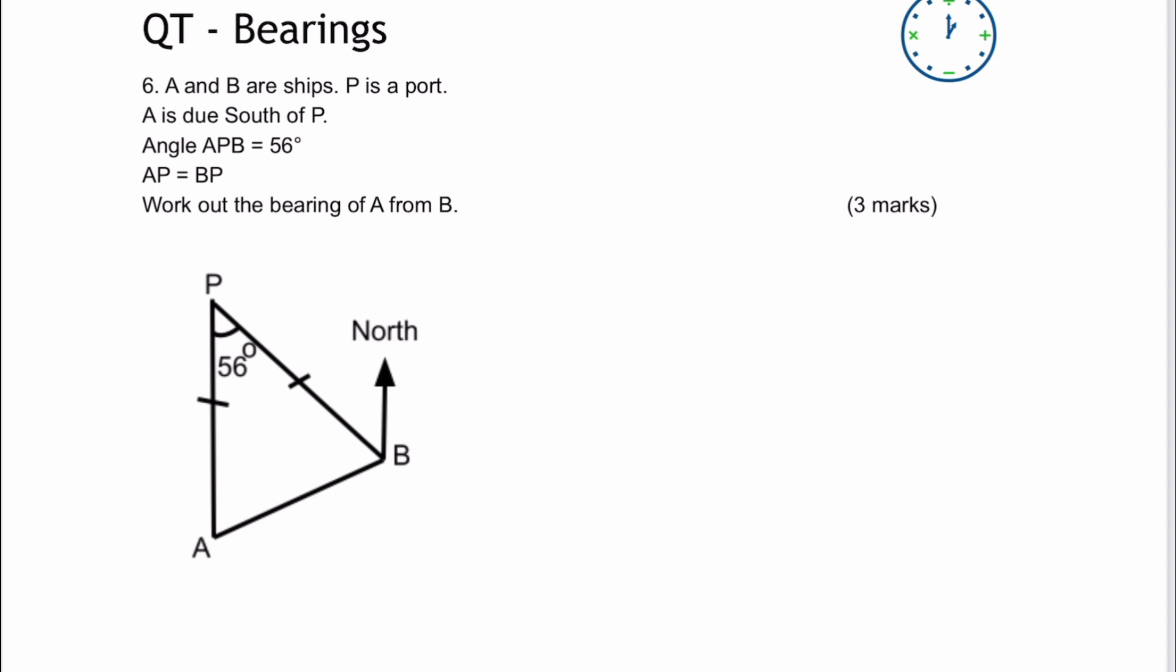So basically what we've got is an isosceles triangle, because we're told that AP equals BP, so therefore we can draw this triangle where the top angle is going to be 56 degrees.